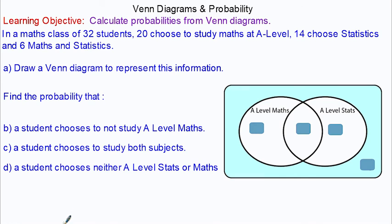In this lesson we're going to calculate probabilities from Venn diagrams. In a math class of 32 students, 20 choose to study A-level maths and 14 choose statistics. Six students choose maths and statistics.